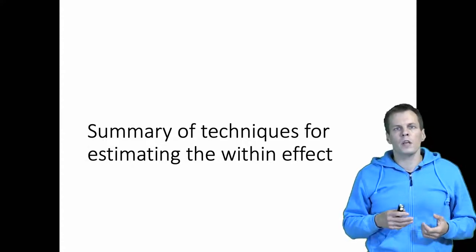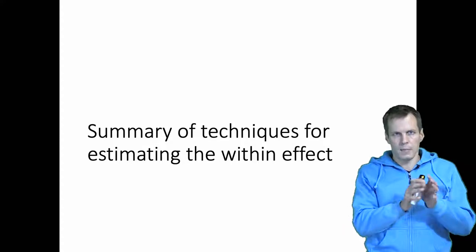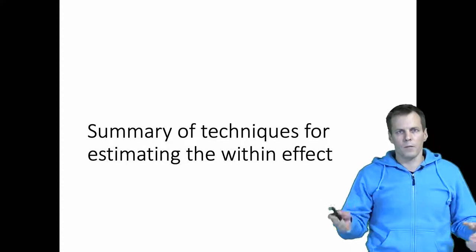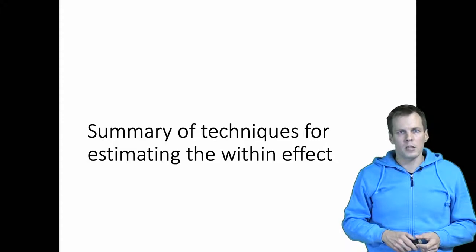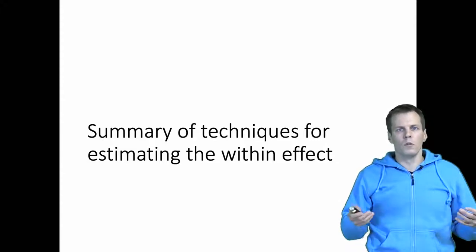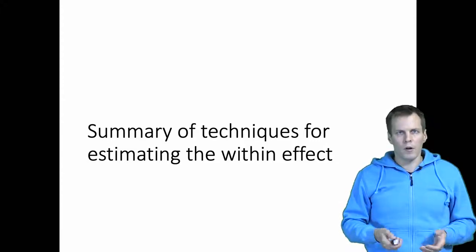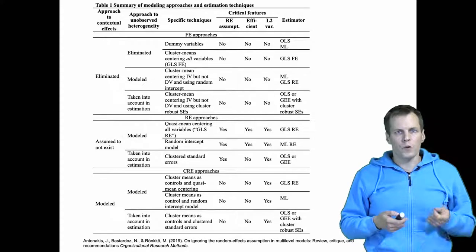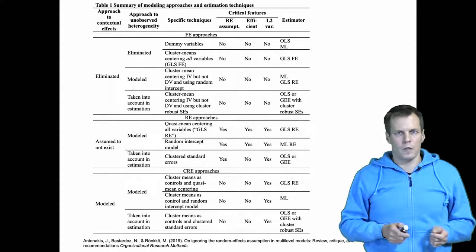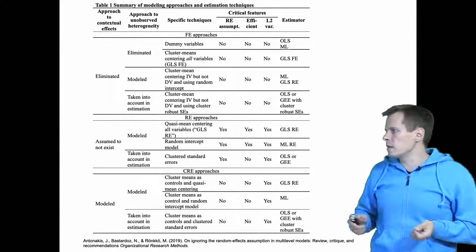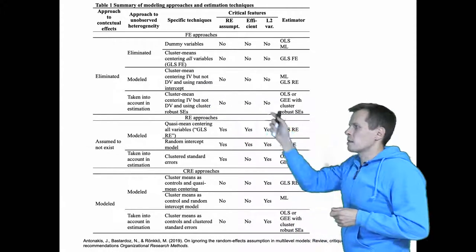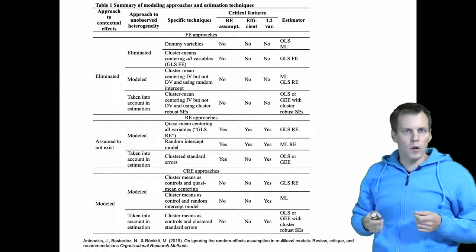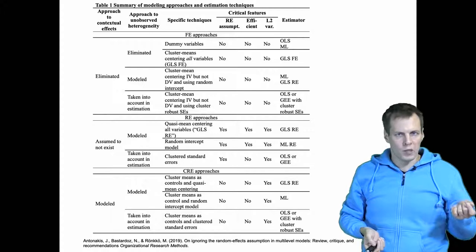Instead of learning all these techniques as separate things that you just have to memorize and understand their assumptions, it's useful to understand how these techniques compare. I think it's useful to consider two different dimensions when evaluating these techniques. The first dimension is what is the approach to contextual effects, and the second is what is the approach to unobserved heterogeneity.